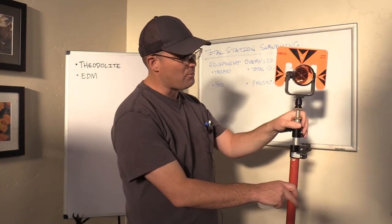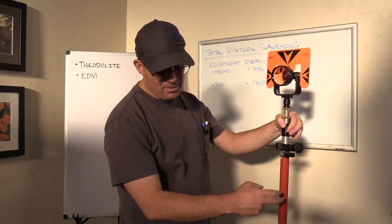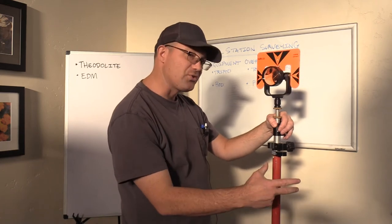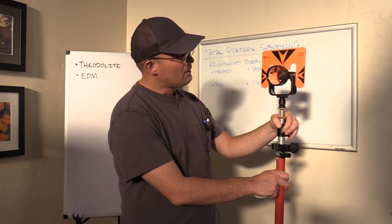When we're doing topo surveys, for dirt topos, we don't have the bipod on. So we use the bipod when we're shooting control points, or when we're doing what we call hardscape topo—topo on concrete or pavement that needs to be really accurate.